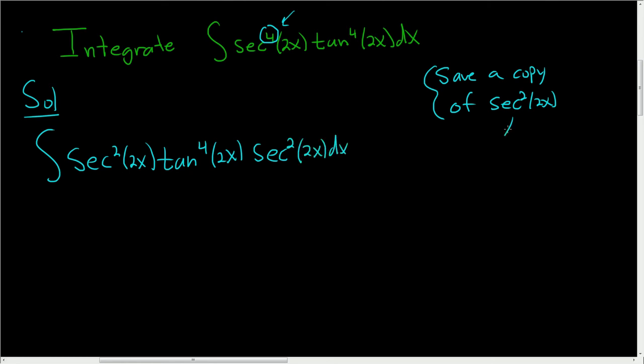Since we saved a copy of secant squared, u here is going to be the other trig function, so u will be tangent 2x. The problem is this, that's not a tangent, so what we'll do is rewrite this using an identity.